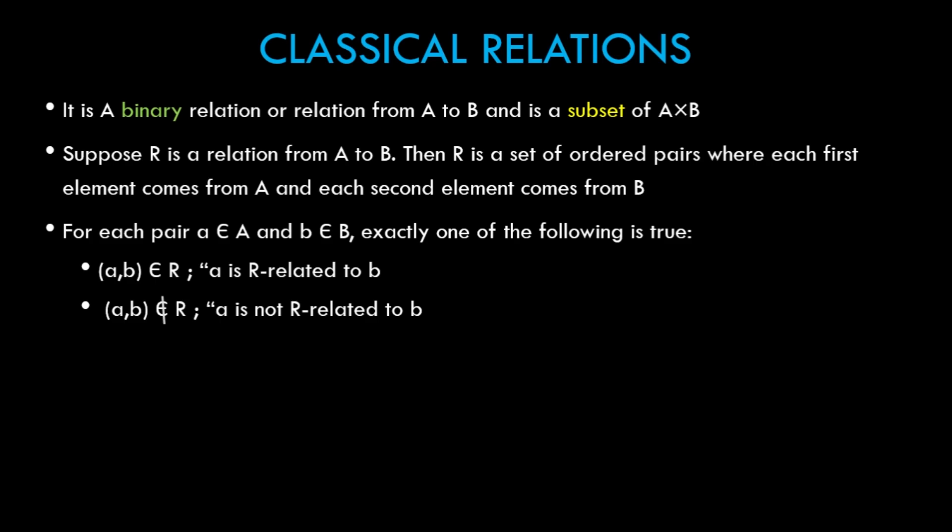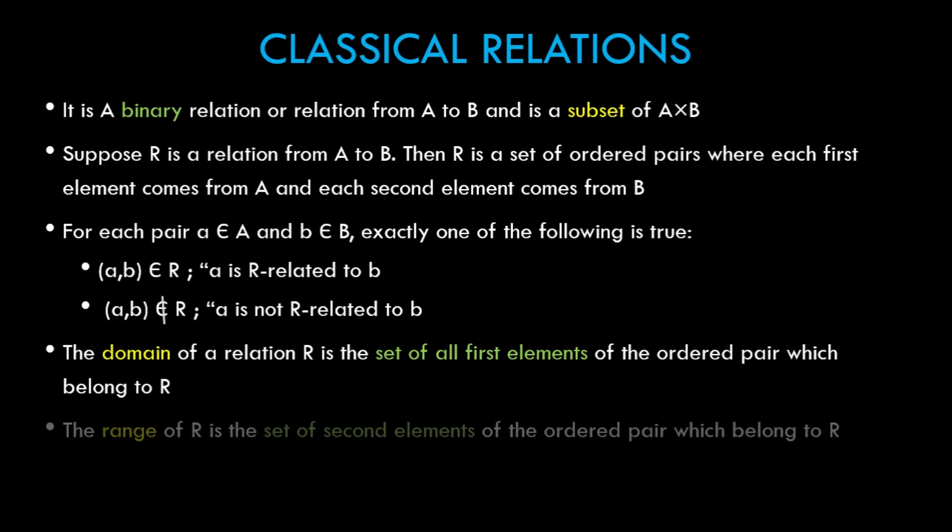The domain of a relation R is the set of all first elements in the ordered pair which belong to R. The range of the relation R is the set of second elements of the ordered pair which belong to R. So this was just some theory.